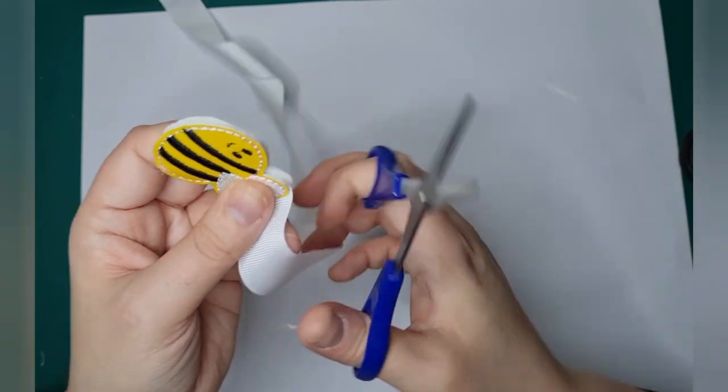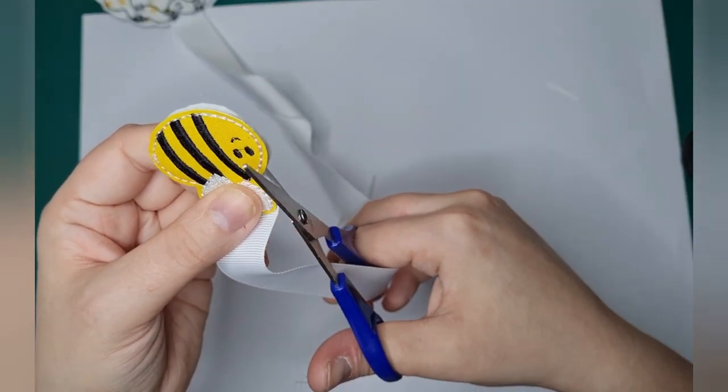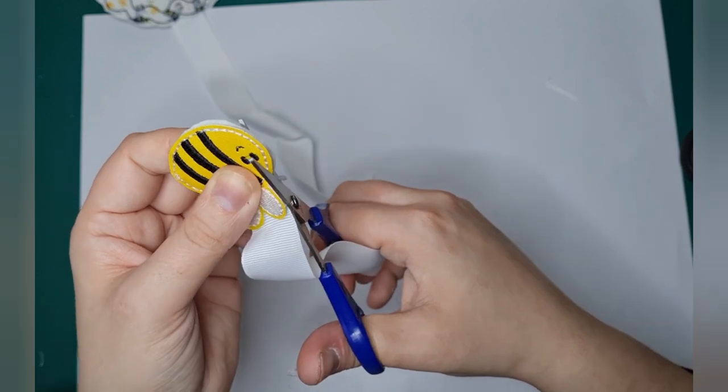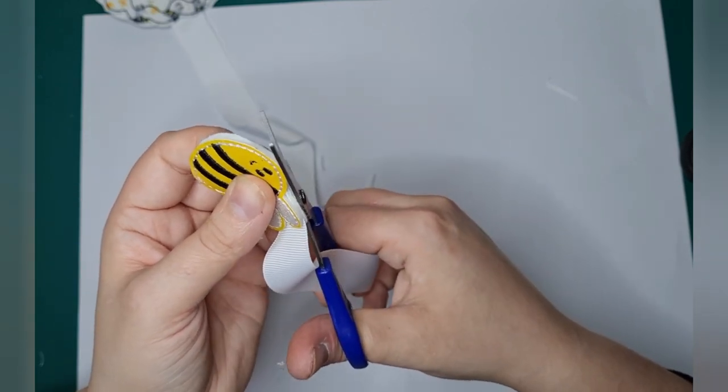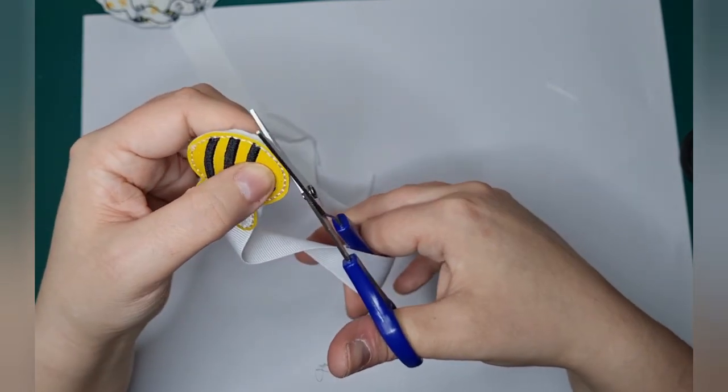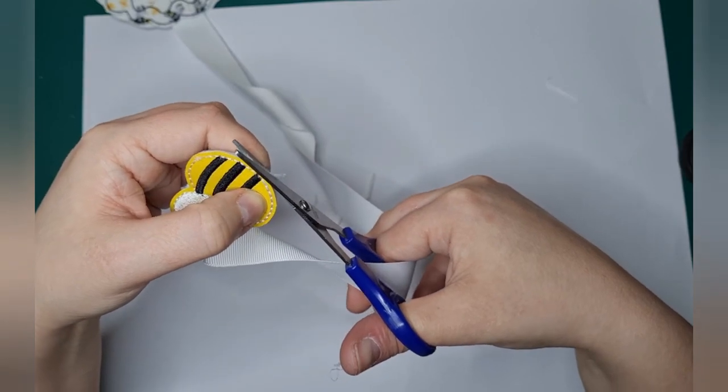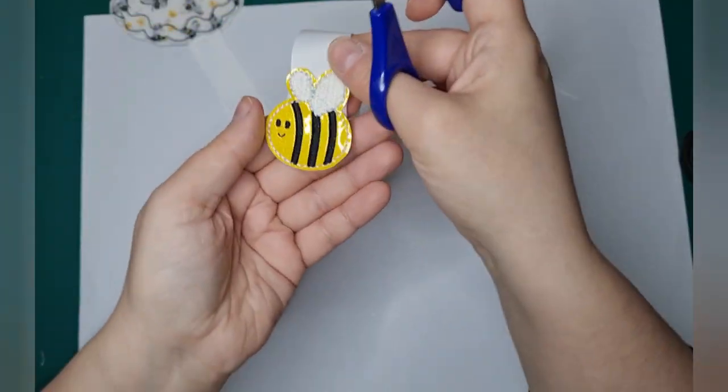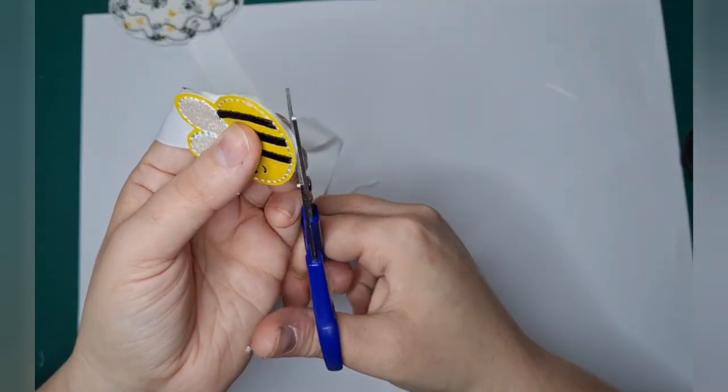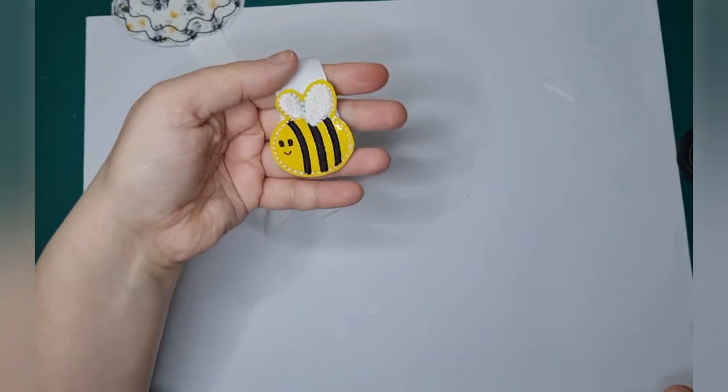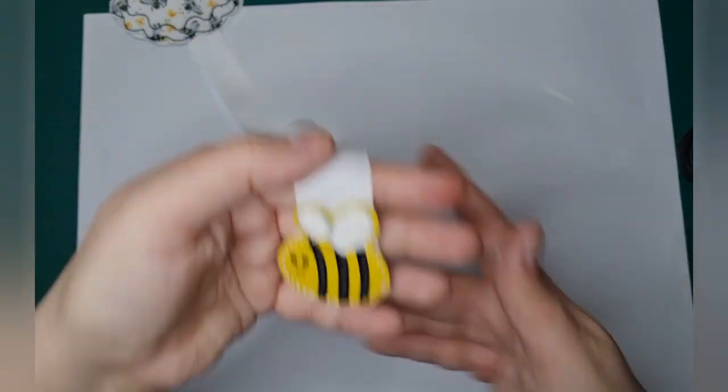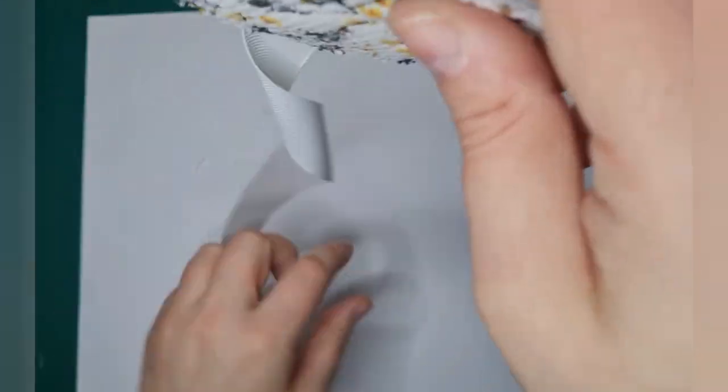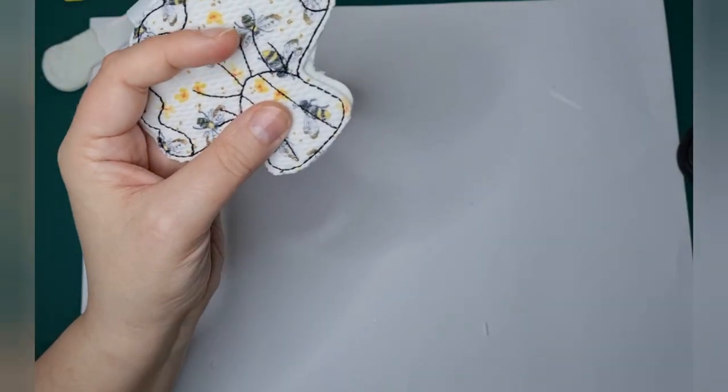Don't want to cut any of the ribbon. There you go. So that's one bit. You just don't want to see any of that felt from behind. And again we're going to do exactly the same with the dress.